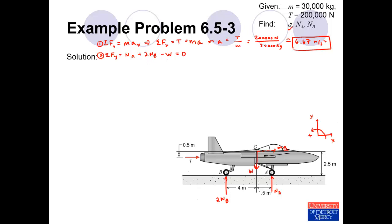That third equation will be the sum of the moments. We have flexibility in choosing the reference point. Since we have two unknowns, N_A and N_B, the smart approach is to sum moments about either point A or point B, eliminating one unknown. We'll sum moments about point B, so the moment arm of normal force B is zero and it doesn't contribute a moment about that point.